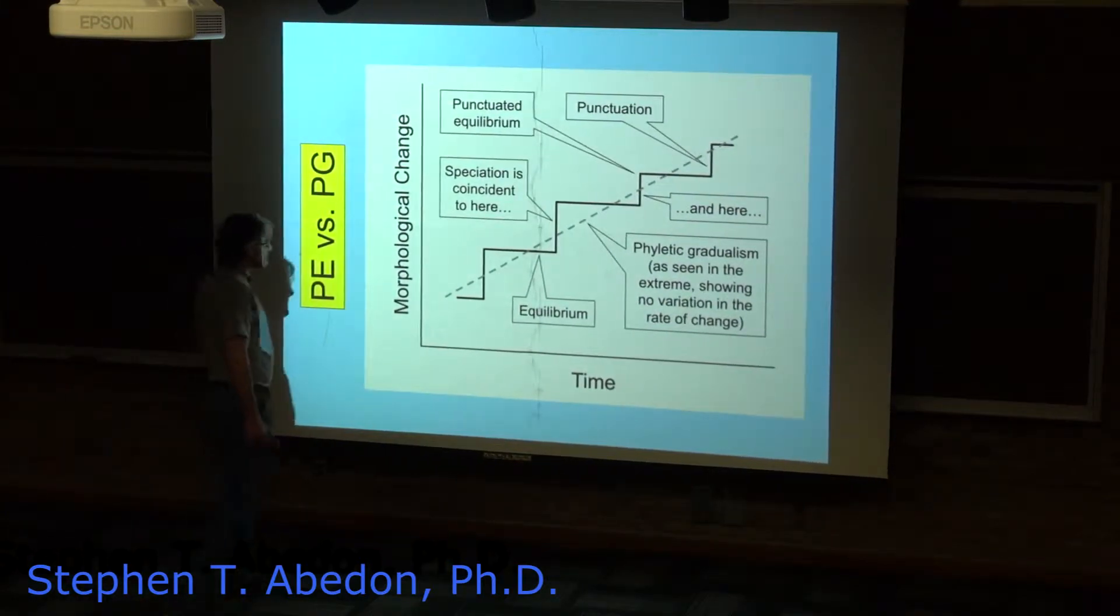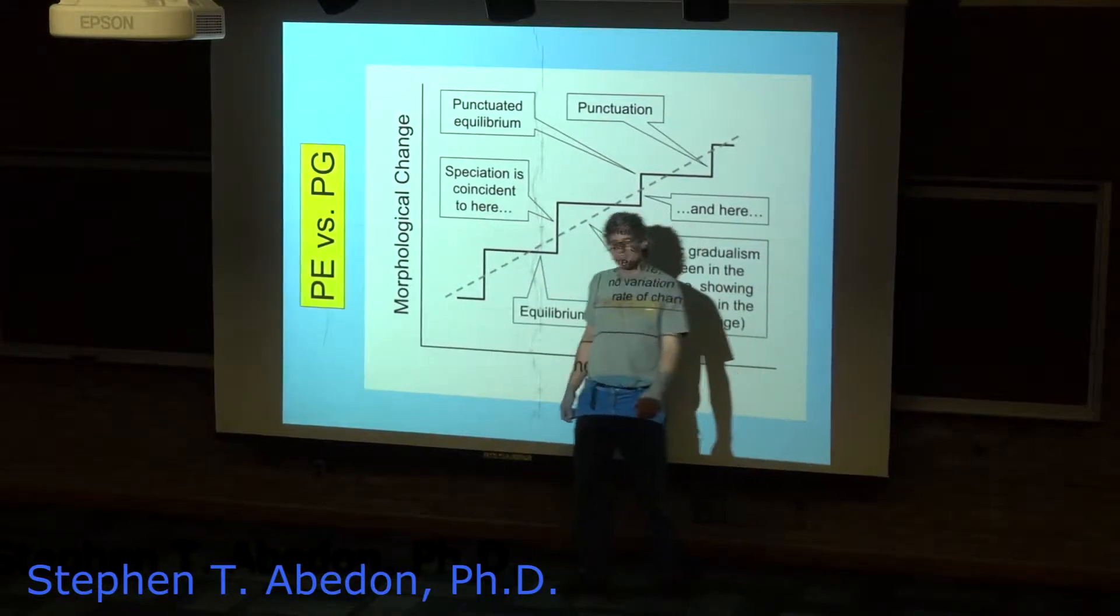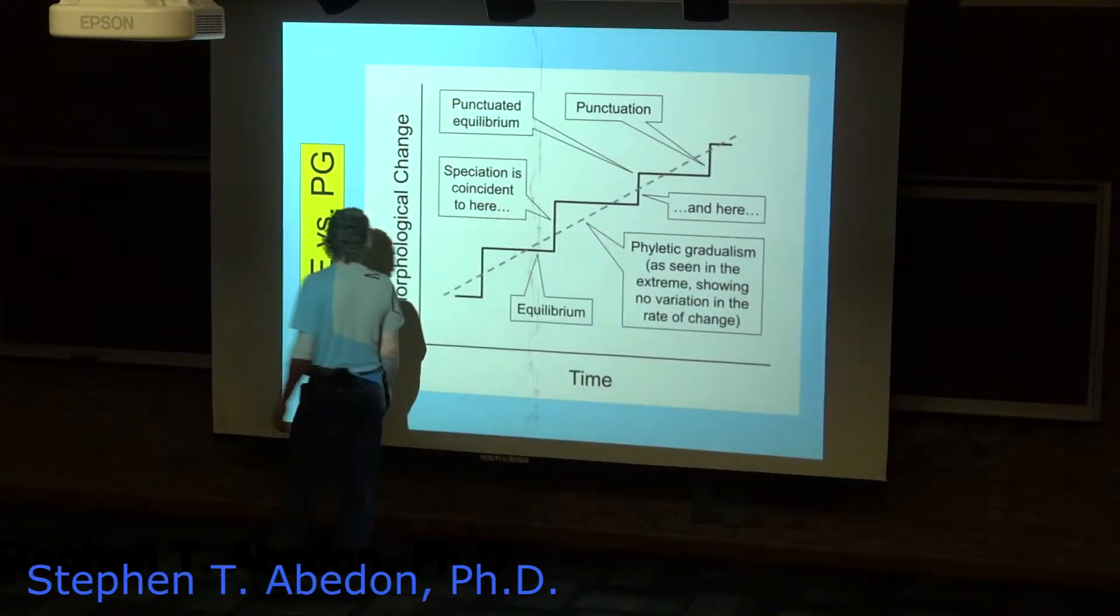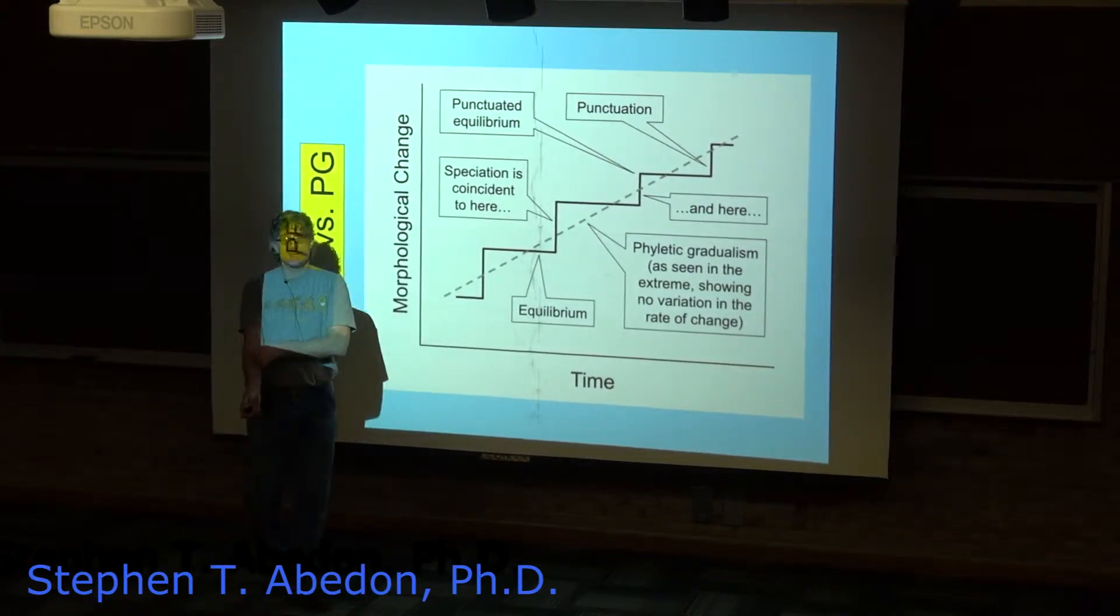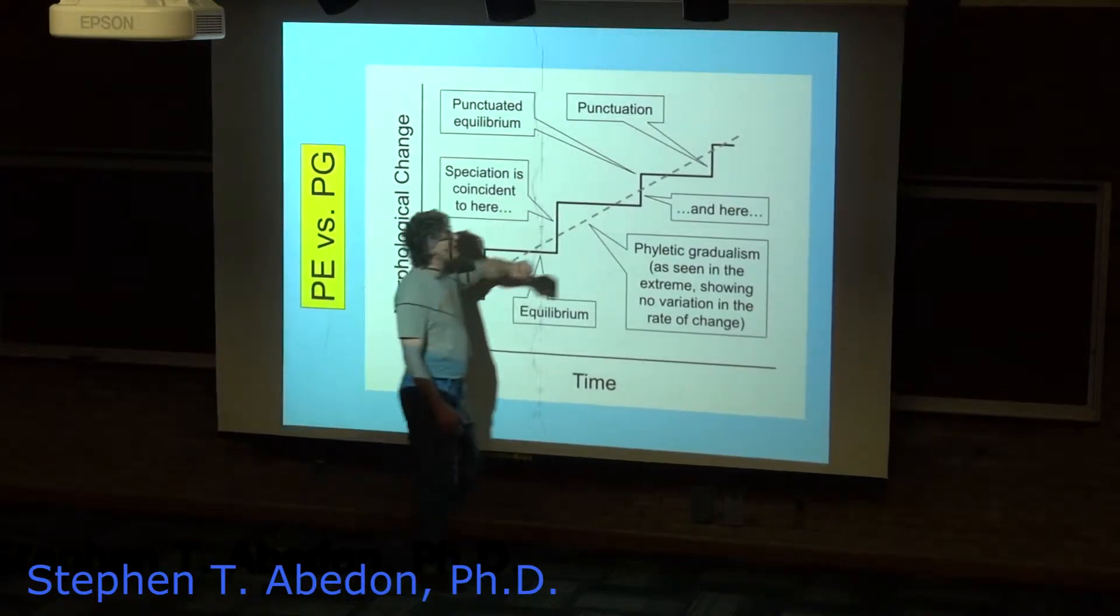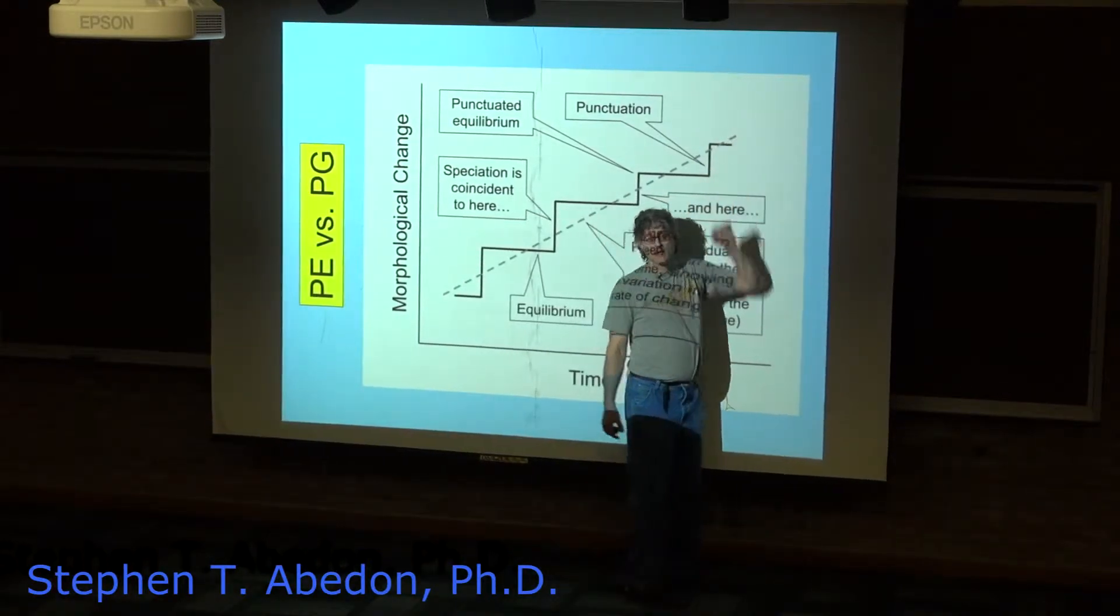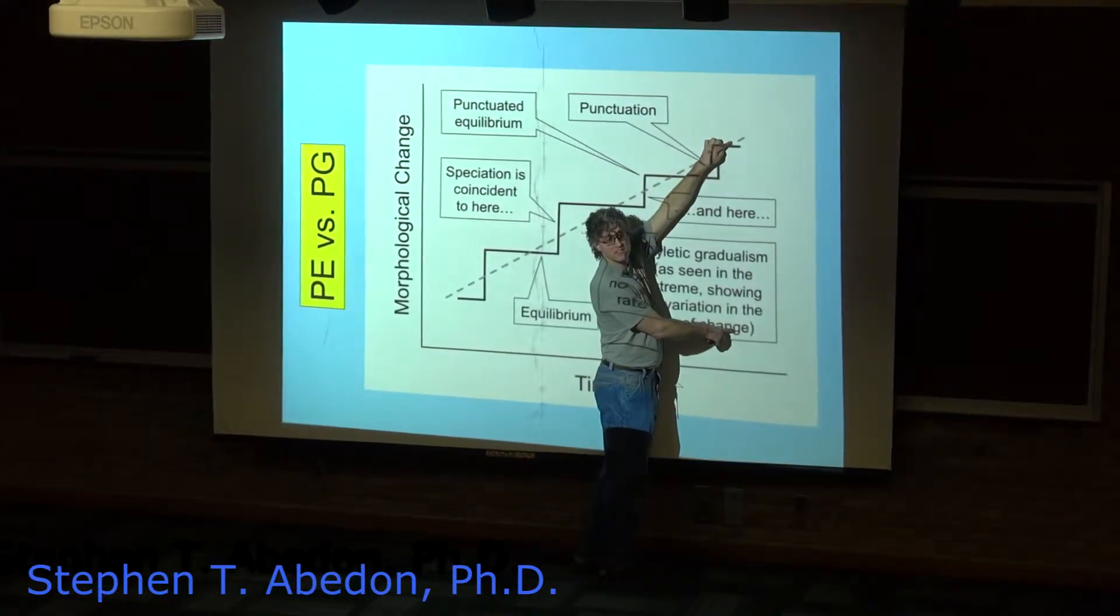Another way we can present this is with time on the horizontal axis as the independent variable and morphological change on the vertical axis. As the population goes from being here to being here, that represents some amount of change that you can quantify as this distance.